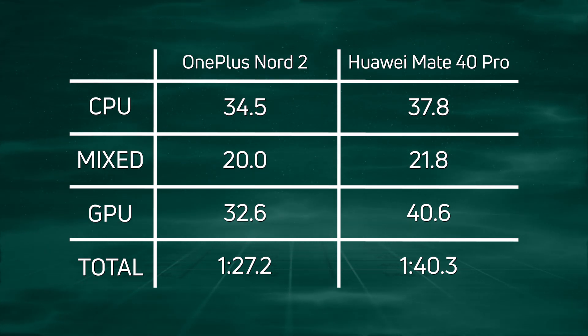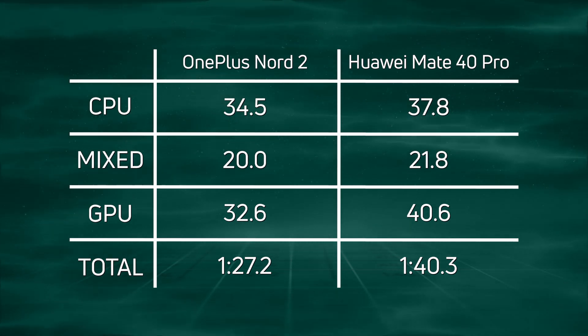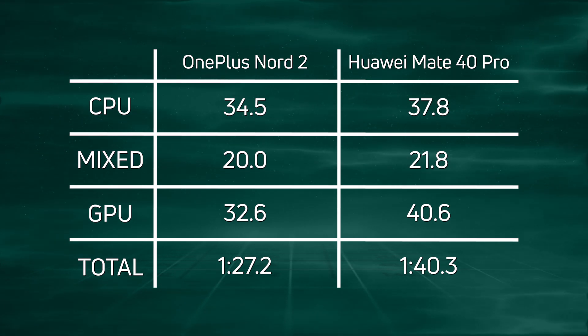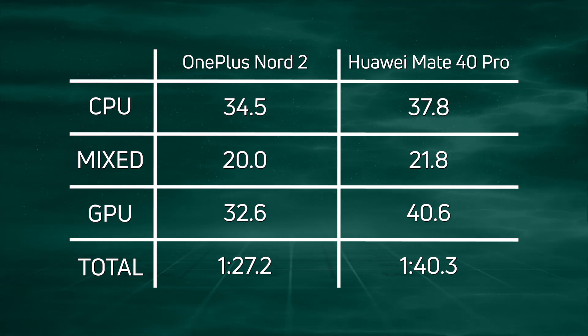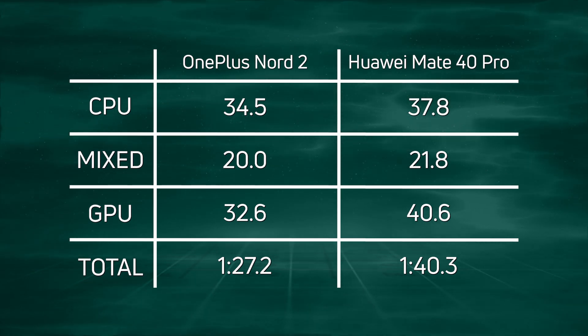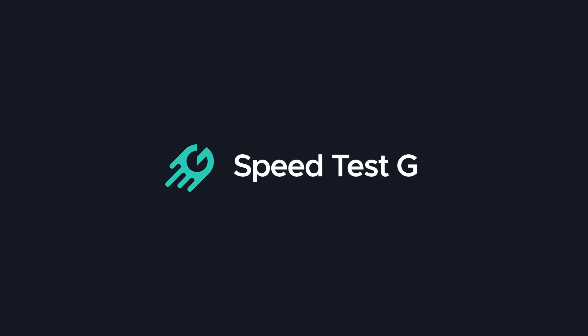Overall, adding up all the scores, the OnePlus Nord 2 won with 1 minute 27.2. My name is Gary Sims, this is SpeedtestG. I really hope you enjoyed this video — if you did, please give it a thumbs up, and if you want to see more of these kinds of videos, why not subscribe to the channel?